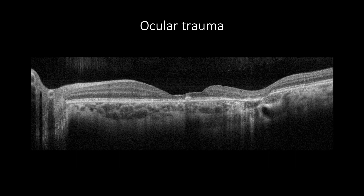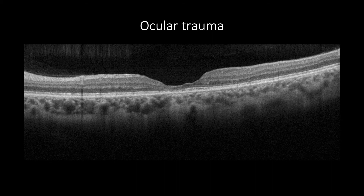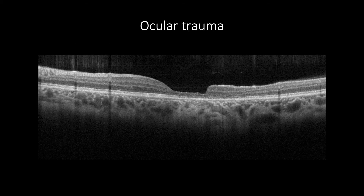After ocular trauma, a contusion of macular tissue may occur forming Berlin edema, which is presented as increased reflectivity of overlying retinal tissue and may end up with the disruption of the ellipsoid zone and RPE, atrophy and pigmentation. Trauma can cause a defect in different levels, such as disruption of both the interdigitation zone and ellipsoid zone, or the defect may extend to the external limiting membrane.